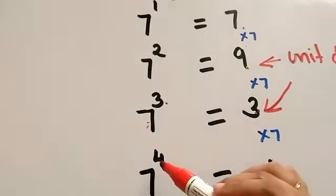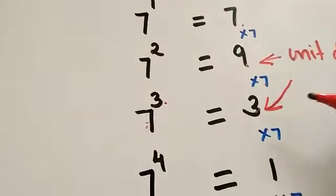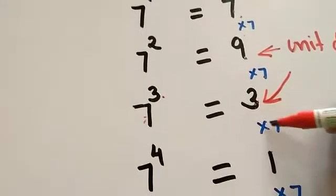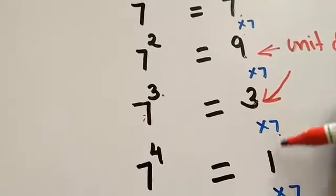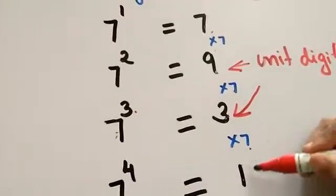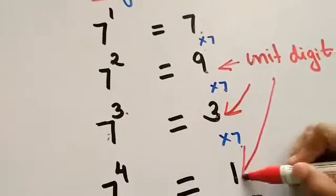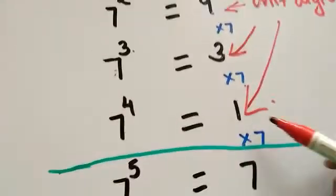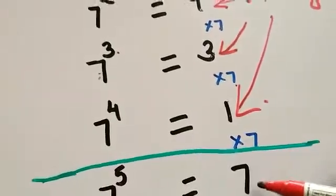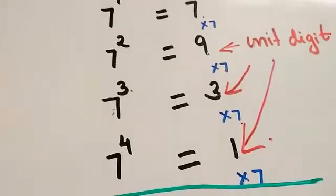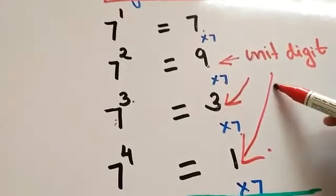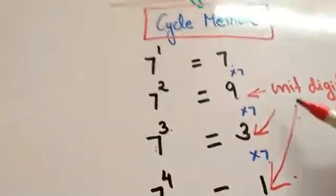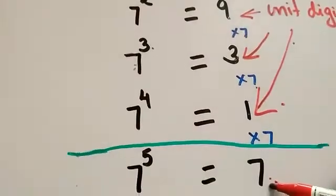7 raised to the power 4: 3 into 7 is 21, so the unit digit is 1. 7 raised to the power 5: 1 into 7 is 7, and this unit digit 7 is the same as the unit digit for 7 raised to the power 1, so the cycle repeats.